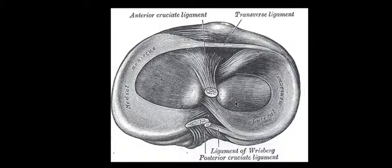Finally, for the meniscus it's important to know that the outer third is the vascularized portion, and this has an important clinical connotation. Injuries in the vascularized outer third have a higher chance of healing, while injuries that are not in the vascularized portion have a lower chance of healing — a worse prognosis.